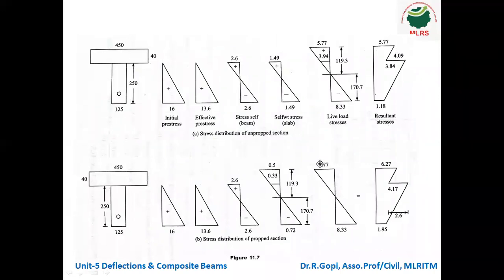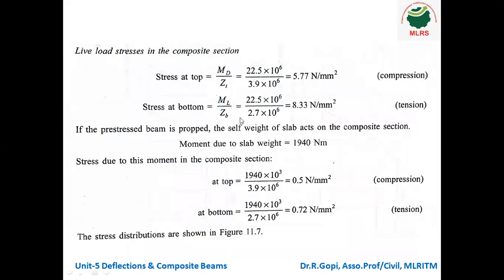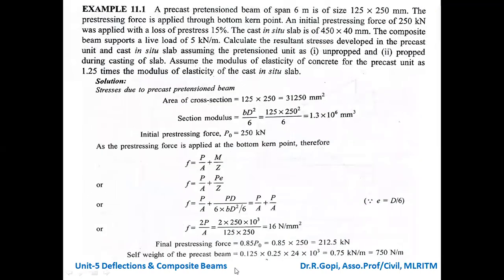In this unpropped problem, the initial prestress diagram shows +16 N/mm² and the effective prestress diagram shows 13.6 N/mm². For the 250 kN initial force the stress is 16; after 15% losses, the effective stress is 16 × 0.85 = 13.6 N/mm². This is the stress distribution diagram for initial and effective prestress.